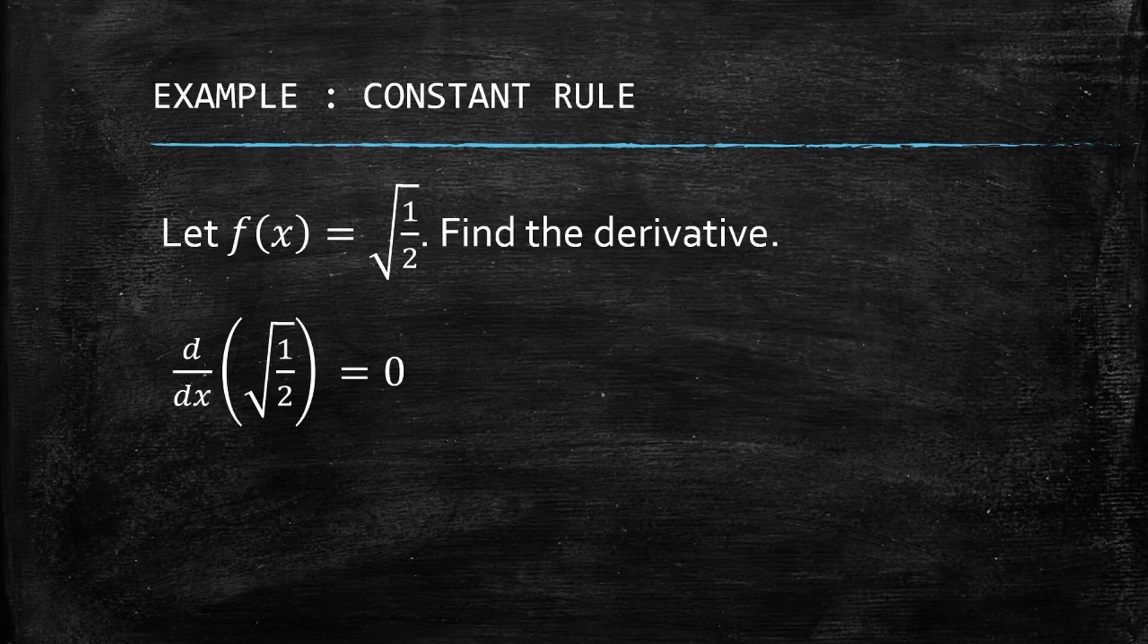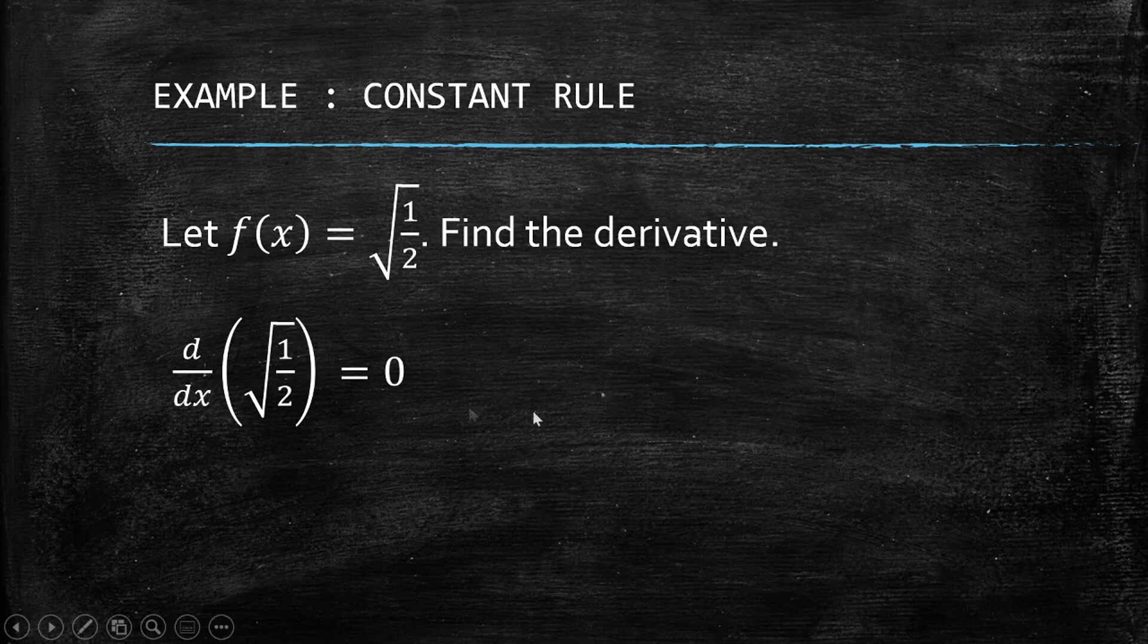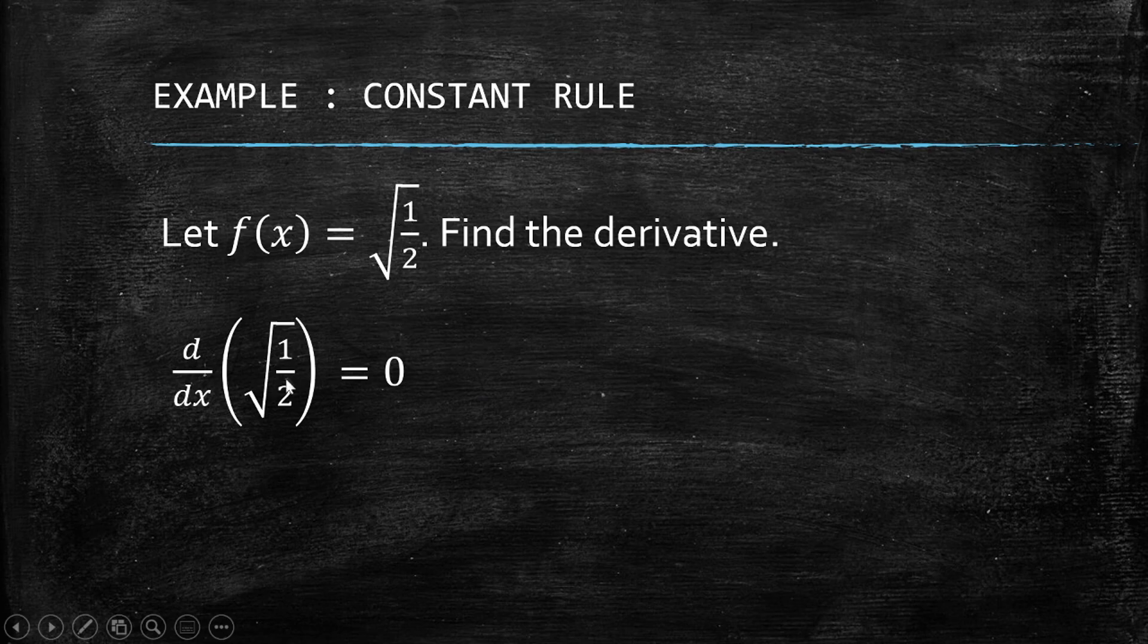We don't need to use the limit of f(x + h) minus f(x) all over h as h approaches zero and so on. We simply answer it as zero. As long as it's a constant, the derivative is always zero.